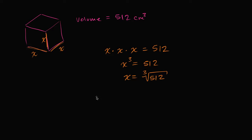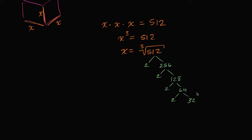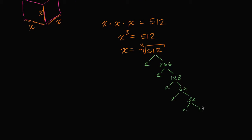So what's the cube root of 512? The easiest way I can think about doing this, if I don't have a calculator, is to just try to do a prime factorization by hand. Does 2 go into 512? Sure, 512 is even. So this is going to be 2 times 256. 256 is also divisible by 2 — that's 2 times 128, which is also divisible by 2. That's 2 times 64, which is also divisible by 2. That's 2 times 32. I can keep going — that's 2 times 16, which is 2 times 2 times 8, which is 2 times 4, which is 2 times 2.